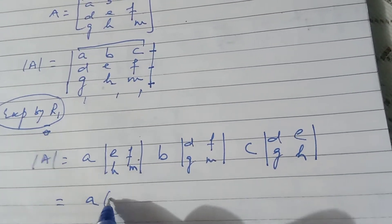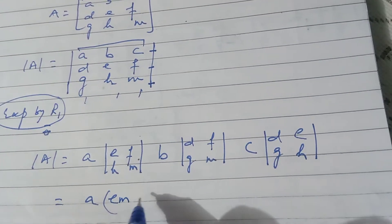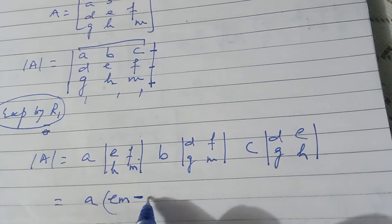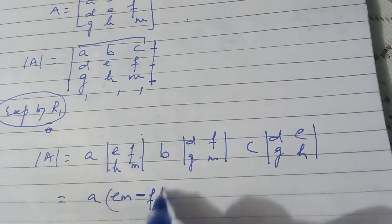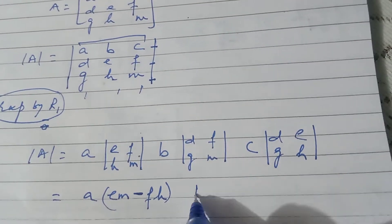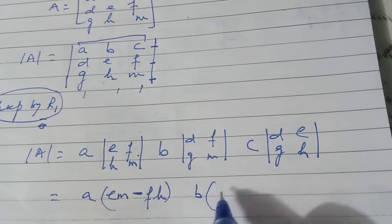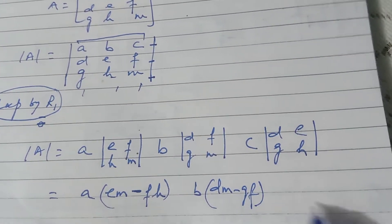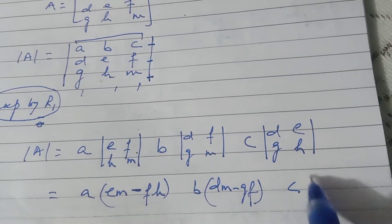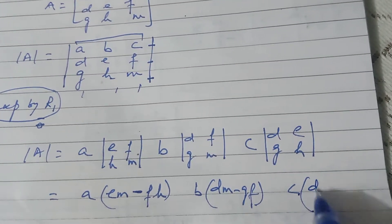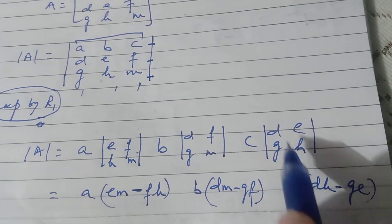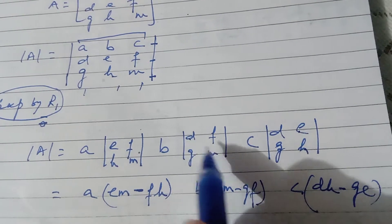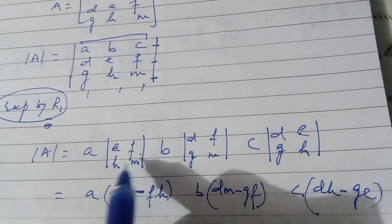So the expansion becomes: A into (EM minus FH), then B into (DM minus GF), then C into (DH minus GE). Each 2x2 determinant uses the formula: this into this minus this into this. The 2x2 formula is the same as before — principal diagonal product minus secondary diagonal product.